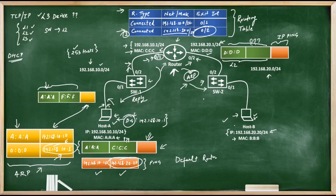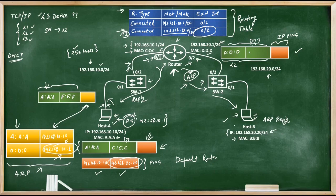The switch broadcasts the ARP message and it reaches Host B. Host B creates an ARP reply and sends it back to the router. Now the router can complete the packet stored in its memory — it knows from the ARP reply that Host B's MAC address is B:B:B. It writes B:B:B in the destination MAC field and forwards the frame towards the switch. The switch consults its CAM table, finds that Host B is on its 0/2 interface, and forwards the packet. The frame eventually reaches Host B.